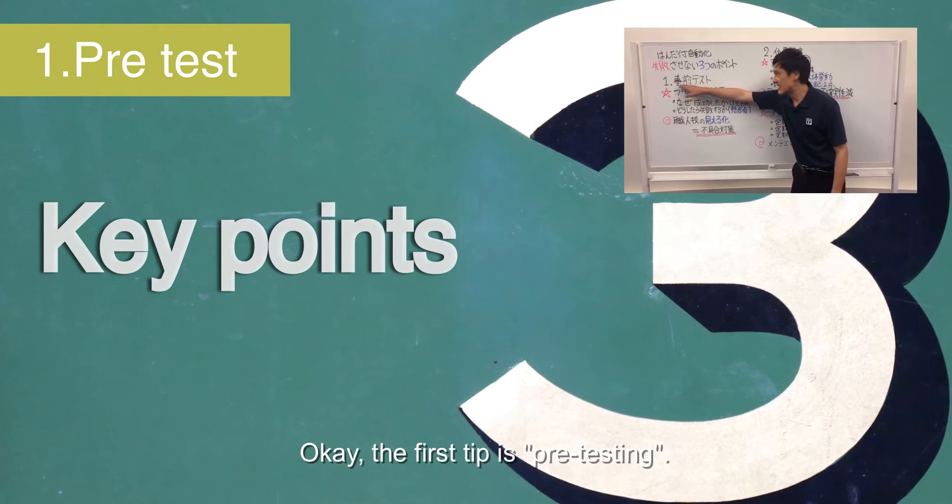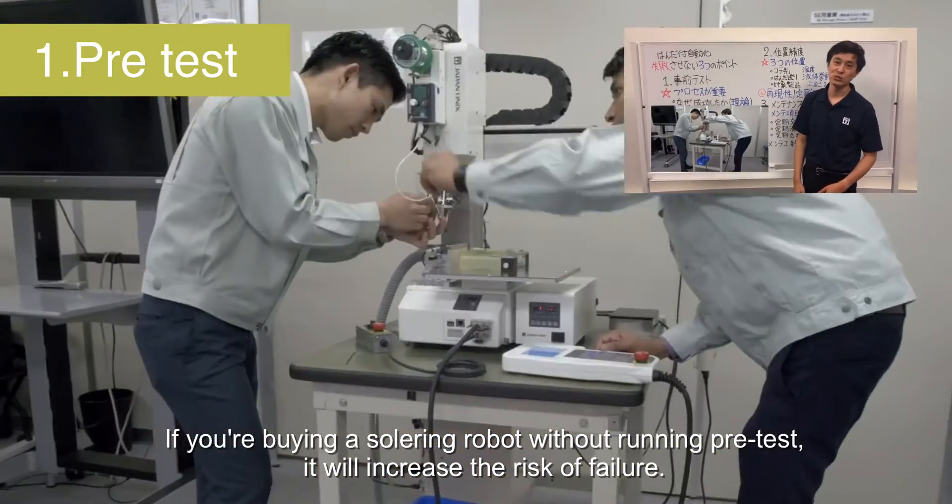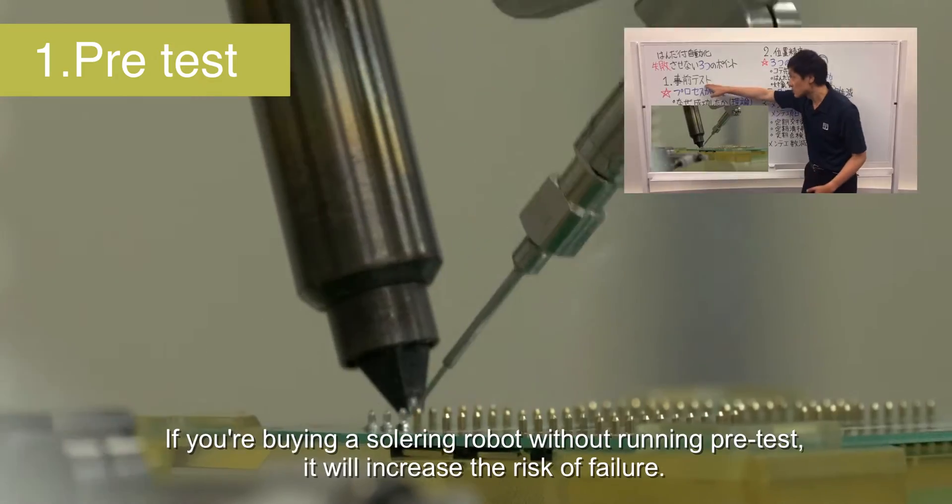Okay, the first tip is pre-testing. If you're buying a soldering robot without running pre-test, it will increase the risk of failure.